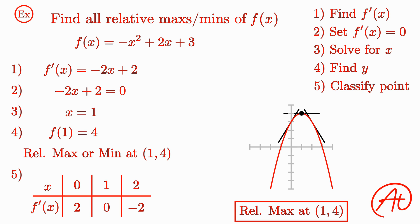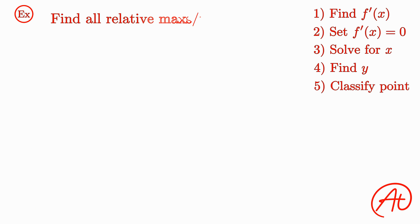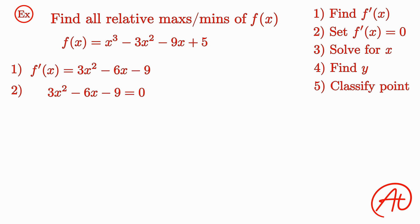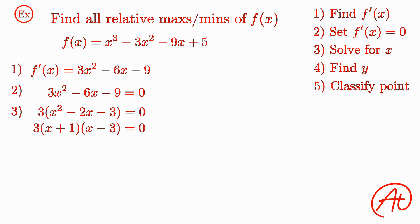Let's do one more example. We're asked to find all relative maxes and mins of f(x), where f(x) is equal to x cubed minus 3x squared minus 9x plus 5. First, using the power rule, the derivative of this function is 3x squared minus 6x minus 9. We set this first derivative equal to zero. We can factor out a 3 from every term, leaving us with 3 times (x squared minus 2x minus 3), which factors into 3 times (x plus 1) times (x minus 3). Solving, we find x equals negative 1 and x equals 3.